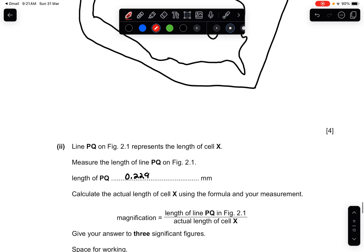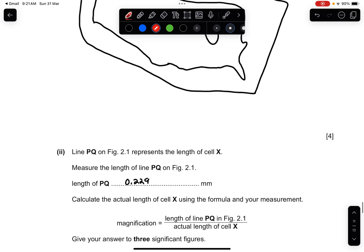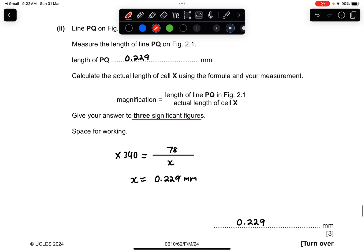Part two: Line PQ on figure 2.1 represents the length of cell X. Measure the length of the line PQ on figure 2.1. So just use your ruler to measure this. And then you times 10 if your ruler is in centimeter. So you just change it to millimeter. Then you divide it with the magnification and you should get an answer of 0.229 in three significant figures. So that would be your final answer.